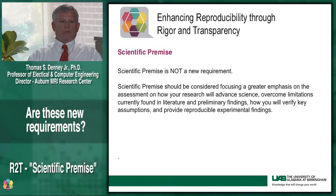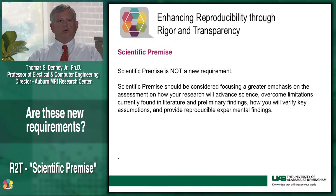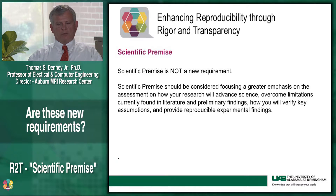These are not new requirements. NIH grants have always required a rigorous statement of scientific premise. However, these new revisions place a greater emphasis on your assessment of the limitations in the previously published literature and your preliminary research and preliminary results, and how your application addresses these limitations and advances the field.